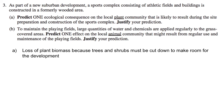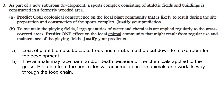Part B: To maintain the playing fields, large quantities of water and chemicals are applied regularly to the grass. Predict one effect on the local animal community and justify your prediction. If a lot of chemicals are put on the grass, the soil may become saturated and chemicals may run off or contaminate the soil. This will cause chemicals to build up in animals that eat the grass, and as these animals are eaten, the pollution will accumulate up through the food chain, causing harm or even death to many animals.